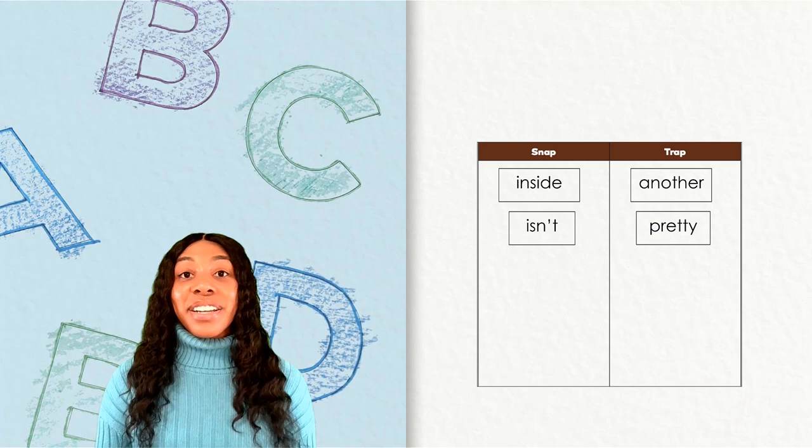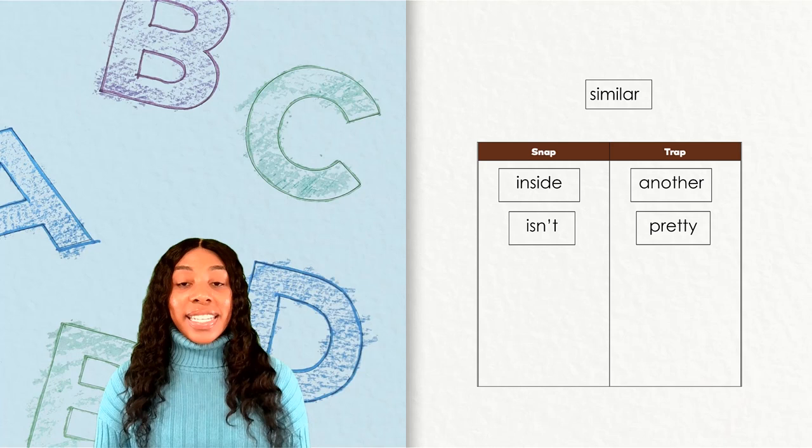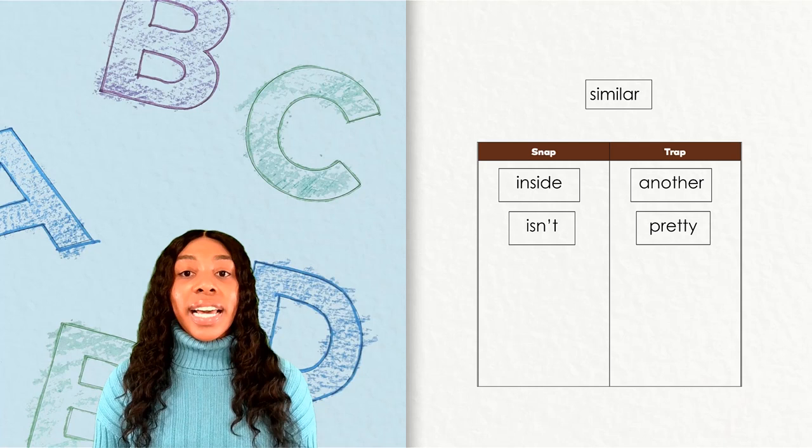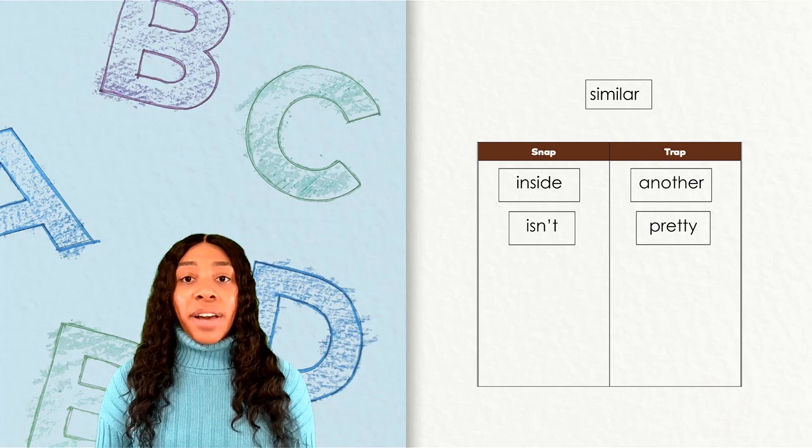Here's our last word: similar. I see that the first syllable 'sim' is a closed syllable with a short vowel, as we'd expect. The second syllable is the same — a closed syllable that sounds like 'ill.' The last syllable, though, has an R-controlled A. It should sound like R, but it doesn't — it sounds like 'er.' Let's put this word in the track column.